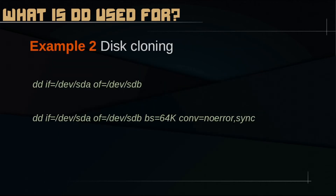Just like in the example we gave for the ISO files, DD can be used for disk cloning. The syntax used is exactly the same. I cannot emphasize this enough — be very careful with the IF and OF parameters, as you can easily cause a lot of damage to your data.